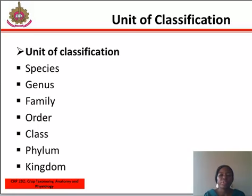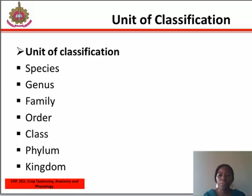Three, family — a group of many genera which shows general structural resemblance to one another, mainly in their floral organs. Four, order — consists of a number of similar families.